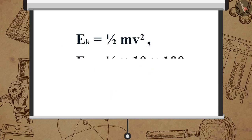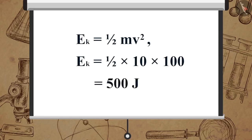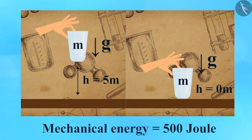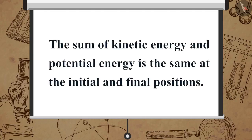Substituting the value of v² in EK = ½mv²: EK = ½ × 10 × 100 = 500 J. Mechanical energy = 0 + 500 = 500 J. Comparing the total energy of the object at both heights, we notice the total energy remains the same. This shows that the sum of kinetic energy and potential energy is the same at the initial and final positions.